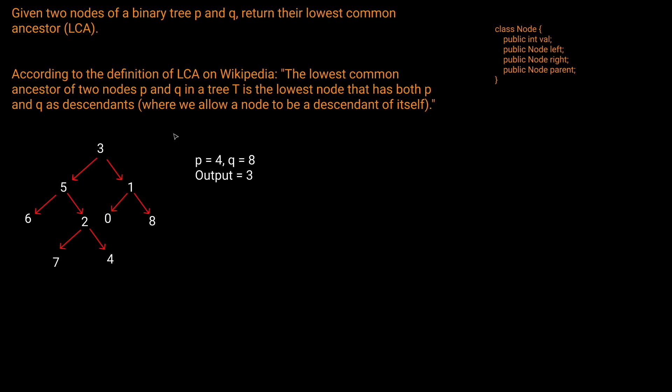Let's read the question prompt. Given two nodes of a binary tree P and Q, return their lowest common ancestor. According to the definition of LCA on Wikipedia, the lowest common ancestor of two nodes P and Q in a tree T is the lowest node that has both P and Q as descendants, where we allow a node to be a descendant of itself. We're given a node as a data structure that has a value, a left and a right, which are both nodes, and it has a parent, which is also a node. So we should keep this in mind when we solve our problem.